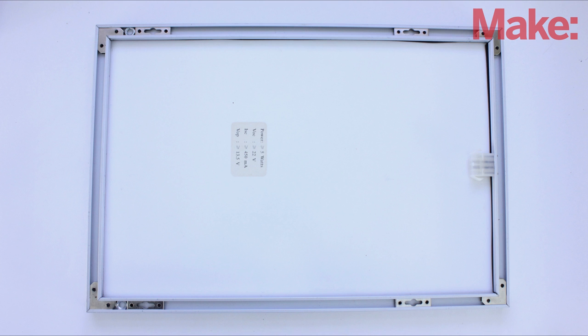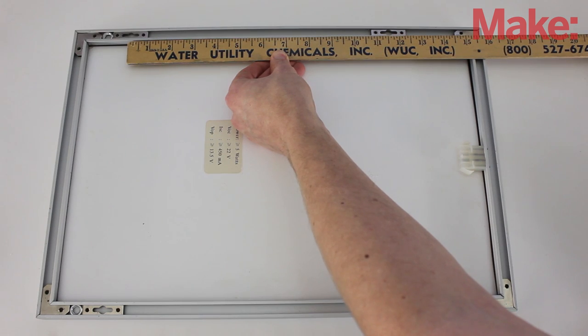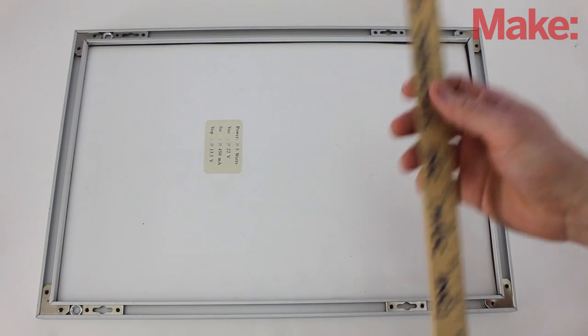Next, you need to locate the mounting brackets on the frame of your solar panel. This is where we'll be connecting the solar panel to the tripod. Measure the distances between all of the mounting holes.